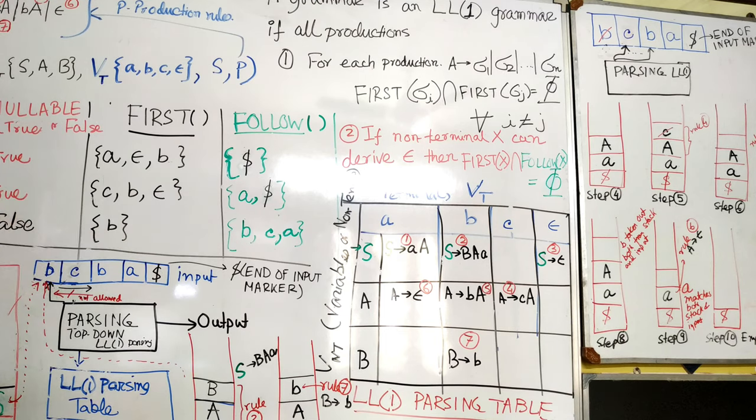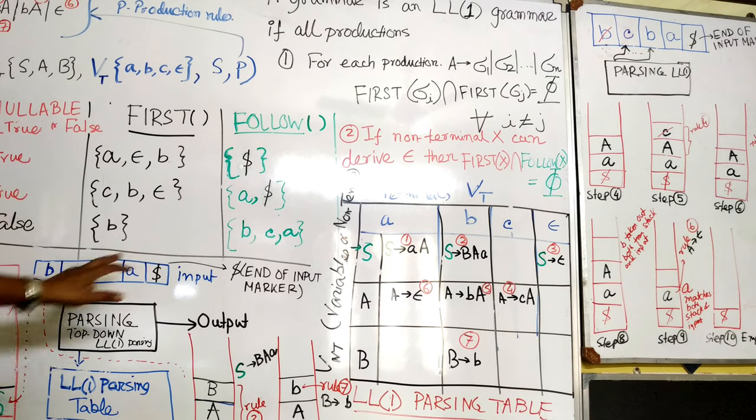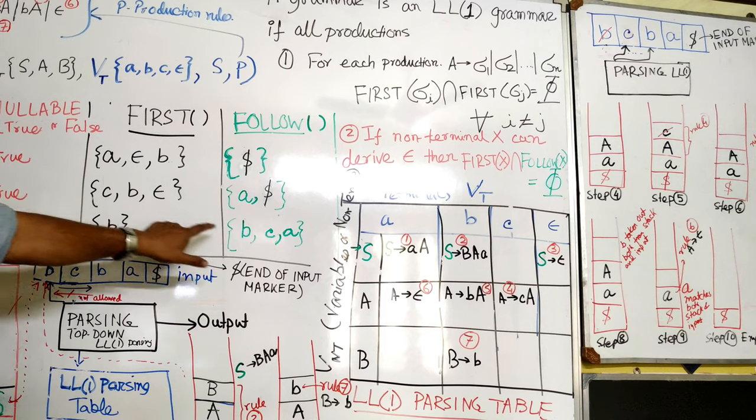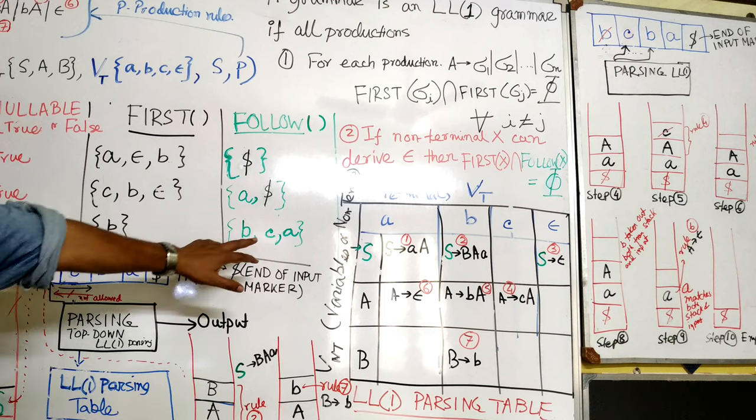Now go to the follow. Follow of S is dollar because S doesn't come anywhere. Follow of A: because A by rule number 1 comes at the end, so definitely dollar should be there. In rule number 2, small a comes after capital A, so this a comes in follow of A. Follow of B is critical. From rule number 2, follow of B is first of A. First of A is c, b, so c, b is there, epsilon cannot be there. One thing you must remember: in follow there should not be epsilon, in first there should not be dollar.